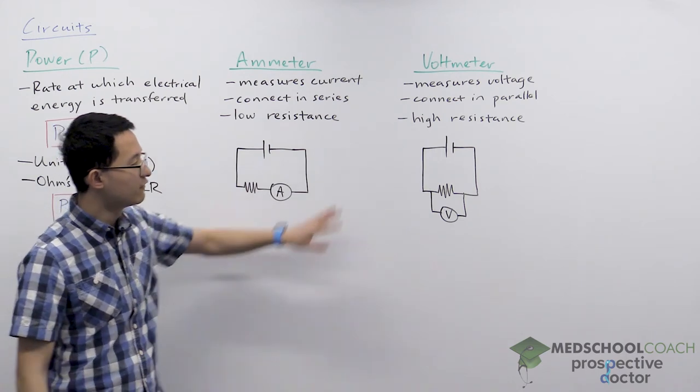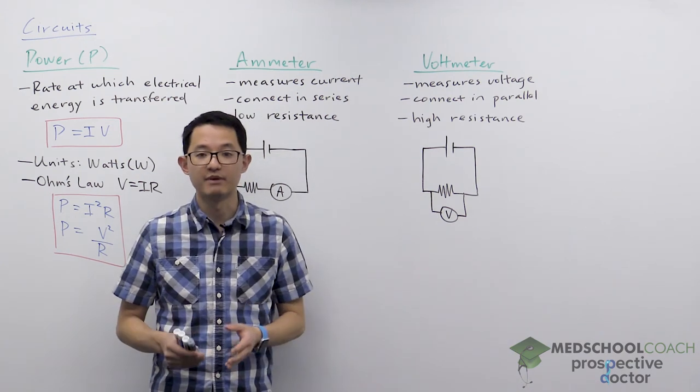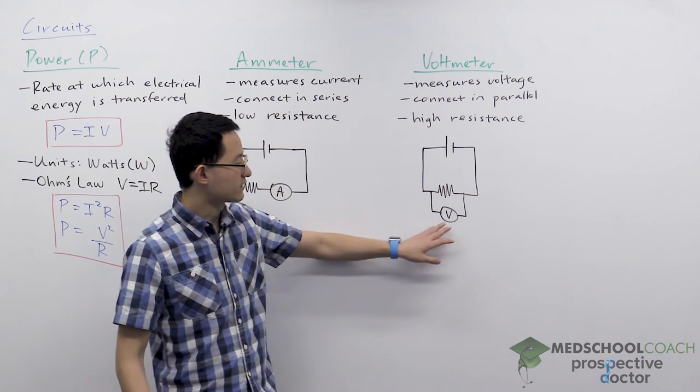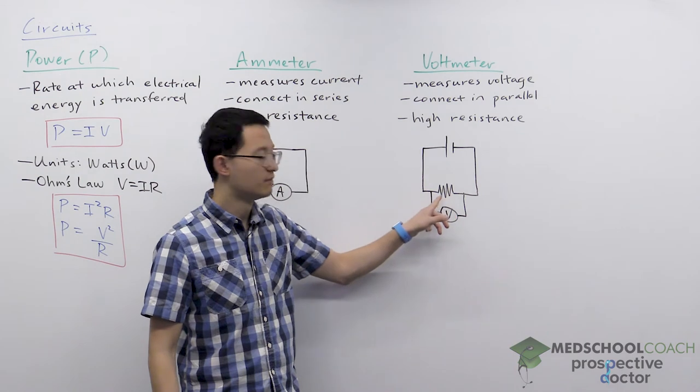Voltmeters are used to measure the voltage. Since we know that voltage is the same in parallel, we want to connect our voltmeter in parallel to the circuit element for whose voltage we want to measure.